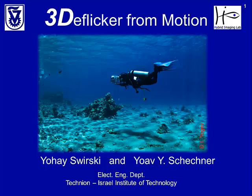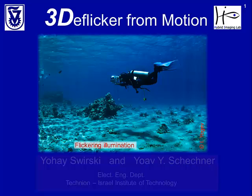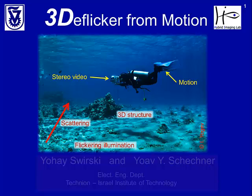In this work, we address several coupled problems related to underwater vision. This image demonstrates all the problems and tools we use. The illumination is not uniform and flickers, and the contrast of the image is reduced with range due to scattering. Under these conditions, we would like to recover the 3D structure of the underwater scene using stereoscopic vision and motion, which we also want to estimate.